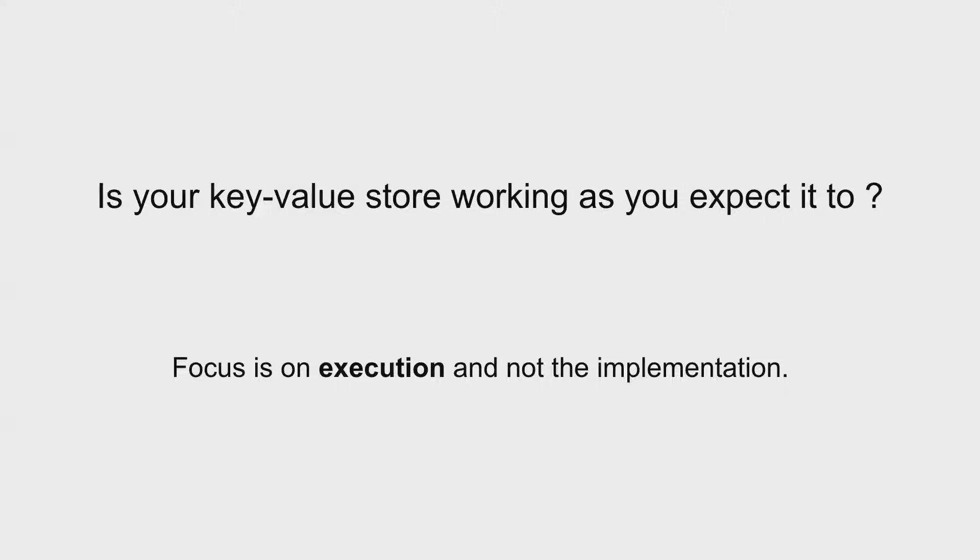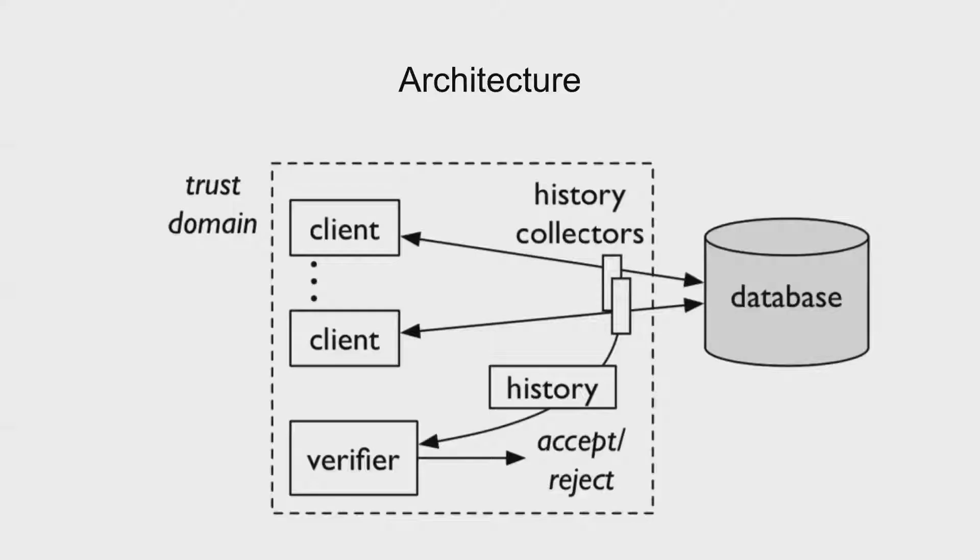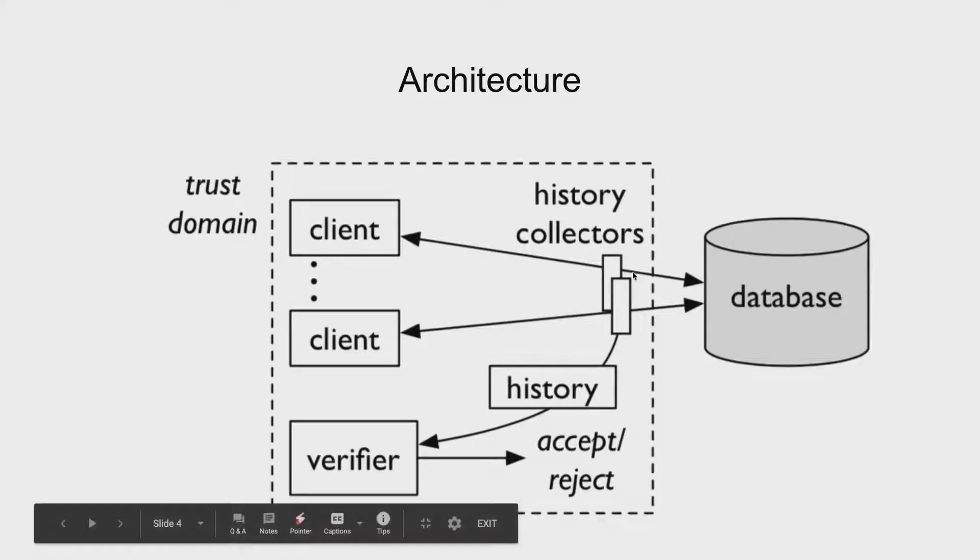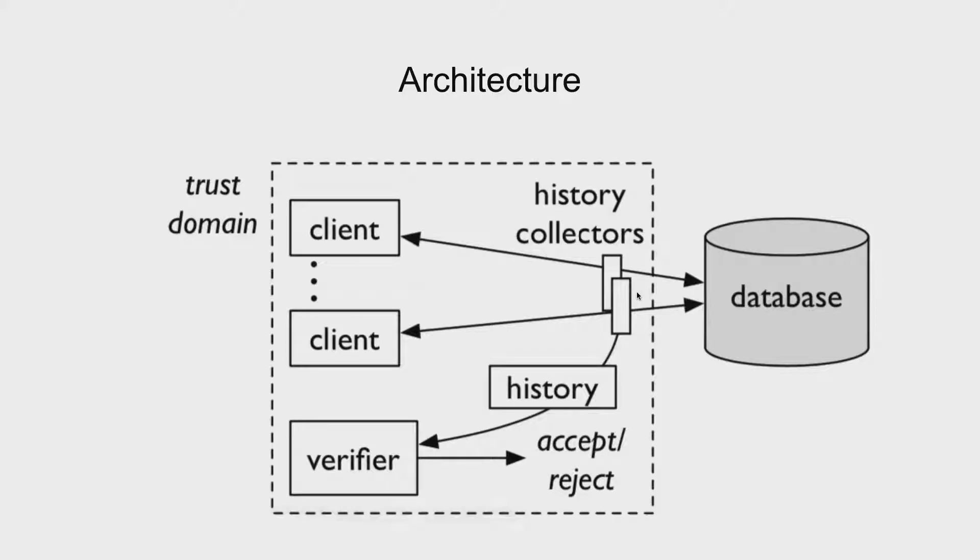With that, let's move on to the architecture of Cobra. As you can see, Cobra does not interact with the database in any way except it has a set of history collectors which sit in front of the clients which merely receive commands from the client, pass them, record those commands and whatever the database replies with, they record that as well and send those off to the client. All of this history is then sent to a verifier whose only job is to tell you whether whatever history it has received till now, whether that is serializable or not.